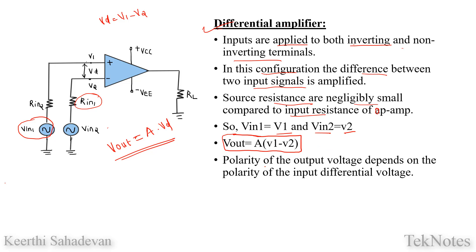Now, what is the output polarity? It depends on the polarity of the input differential voltage. If V1 is high, that corresponds to V1 minus V2 being positive. If V2 is high, then Vd is negative.